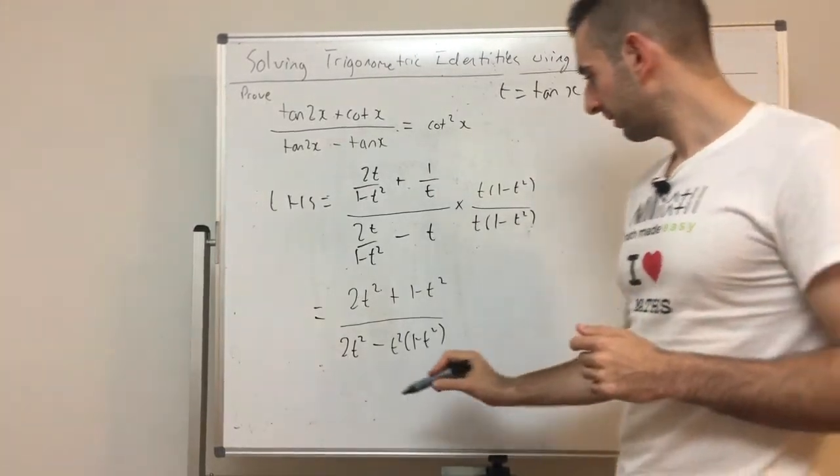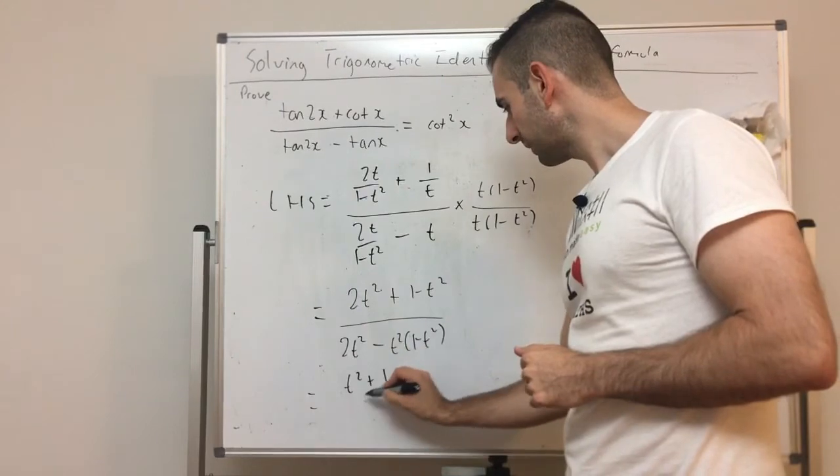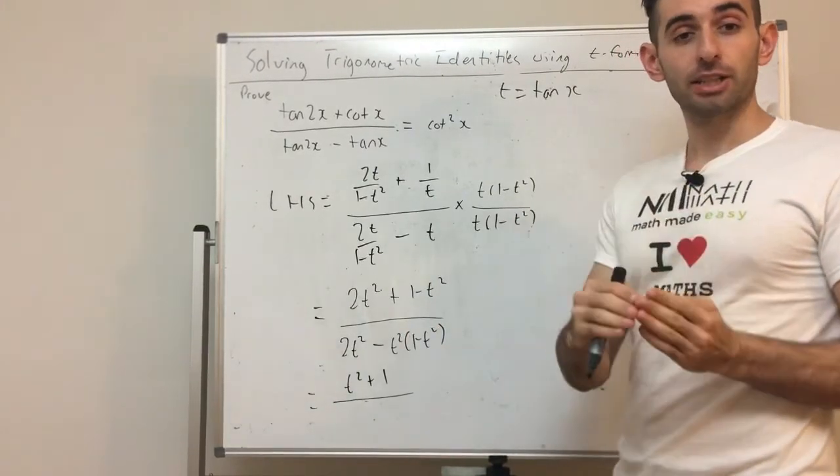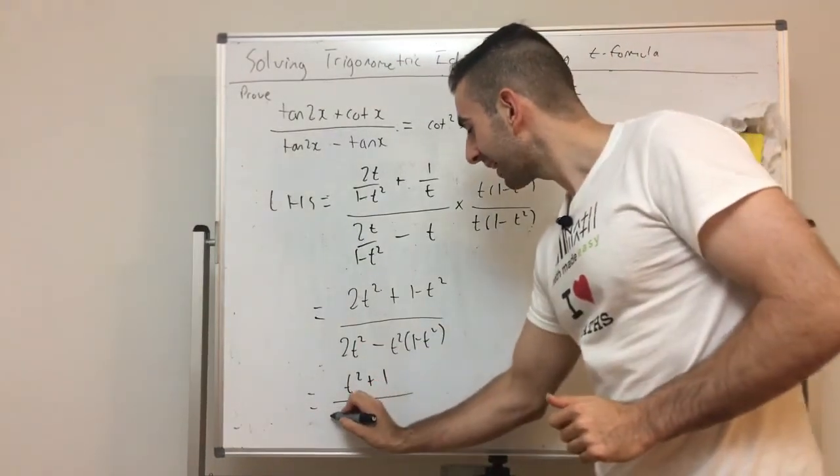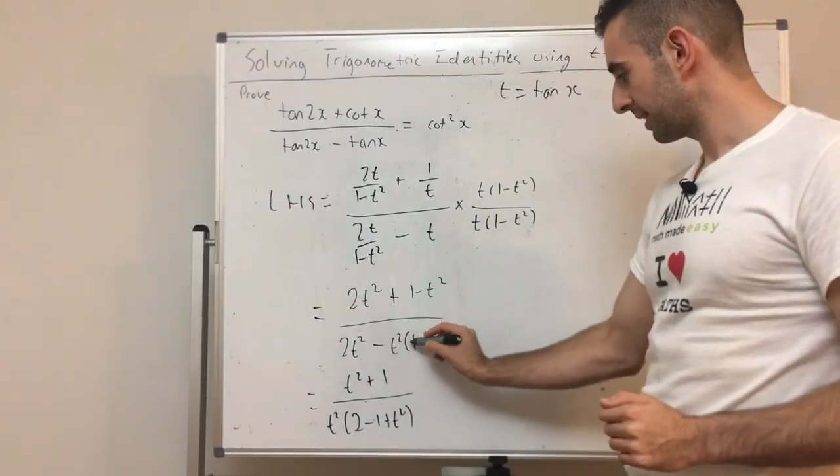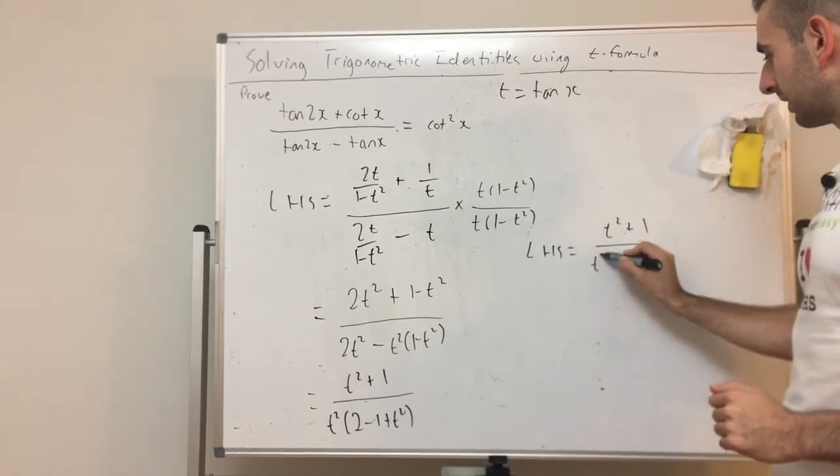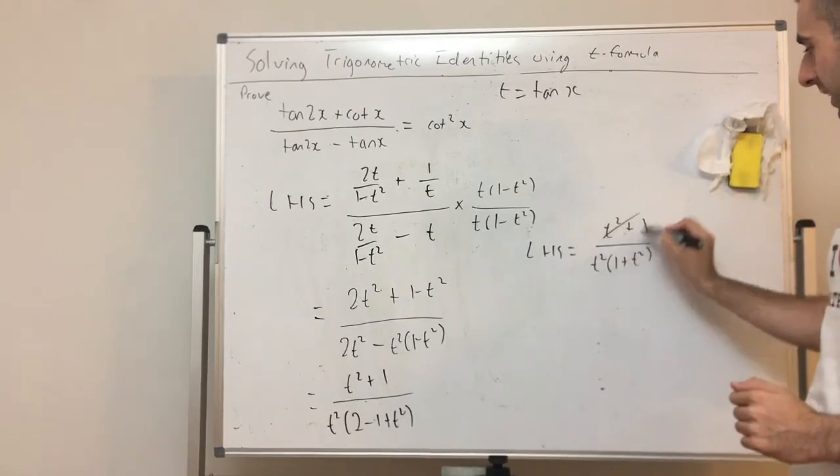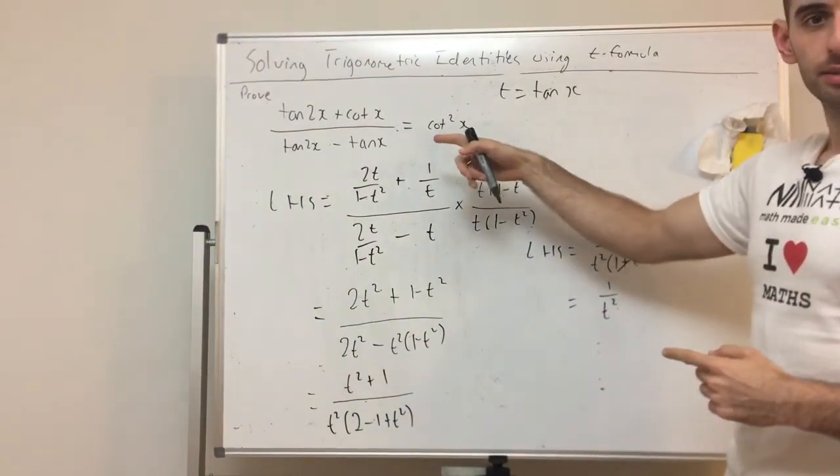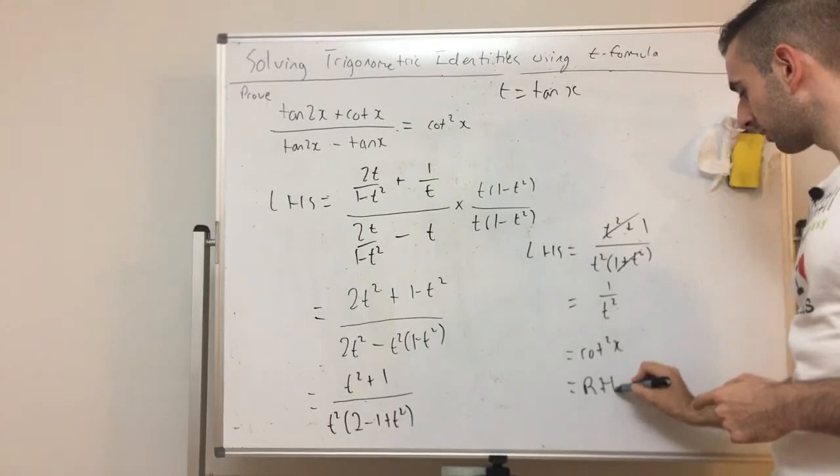So now we're going to clean up like terms. So here, the two T's, the T squared are common, so that's just T squared plus 1. Now on the bottom, I could expand this and simplify, but I always prefer to factorise before expanding because T squared is common. I'll take that out. I'm left with 2 here minus 1 plus T squared, because if I put the minus in here, it changes the sign. So I'll come up to here. So the LHS is T squared plus 1 over T squared brackets, 1 plus T squared, and they cancel now, they're the exact same. So that's 1 on T squared. We reduce as much as possible. Look at the answer, cot squared. Remember cot was 1 on T. So 1 on T squared is just cot squared x, which is just the right hand side.